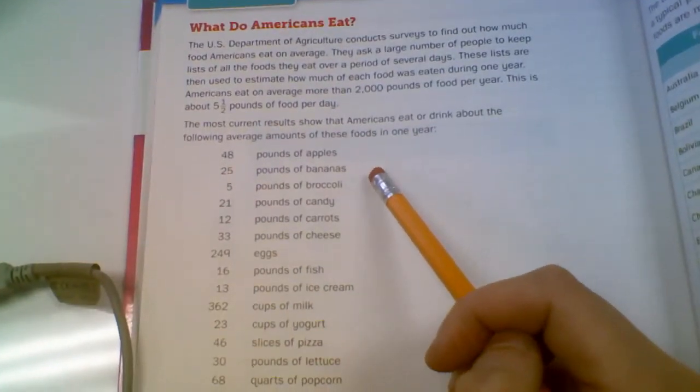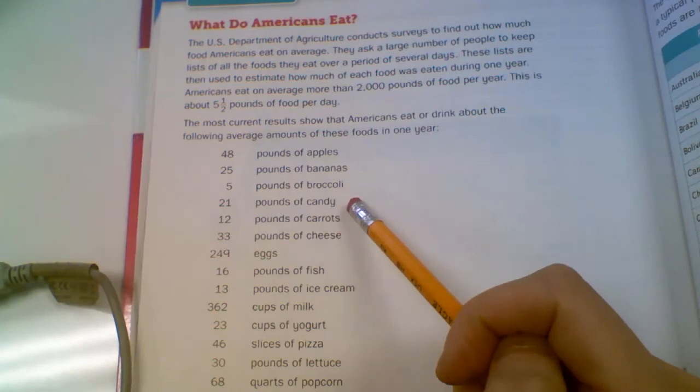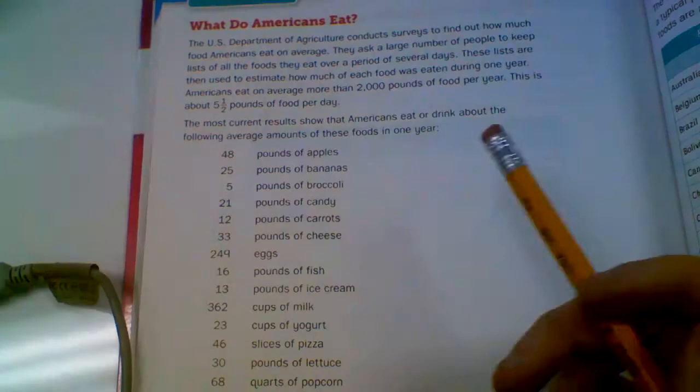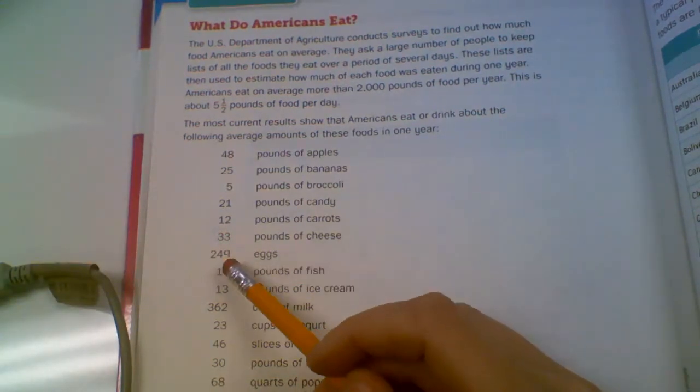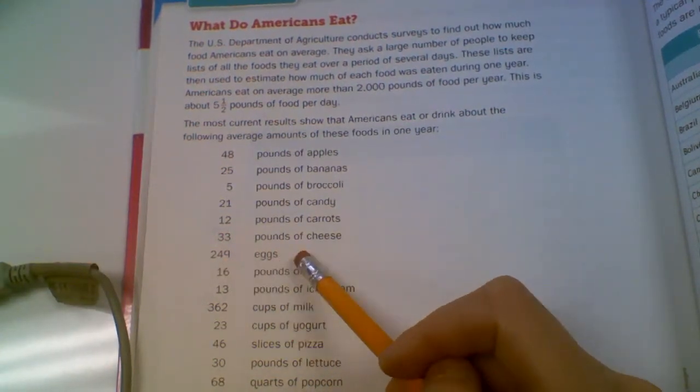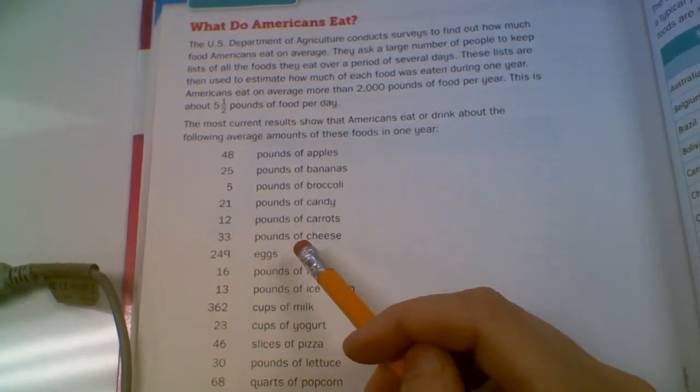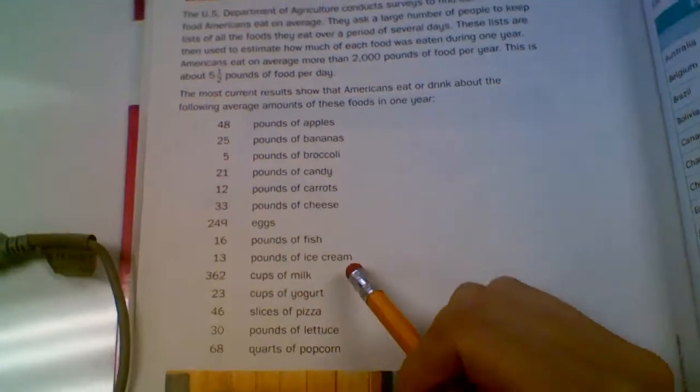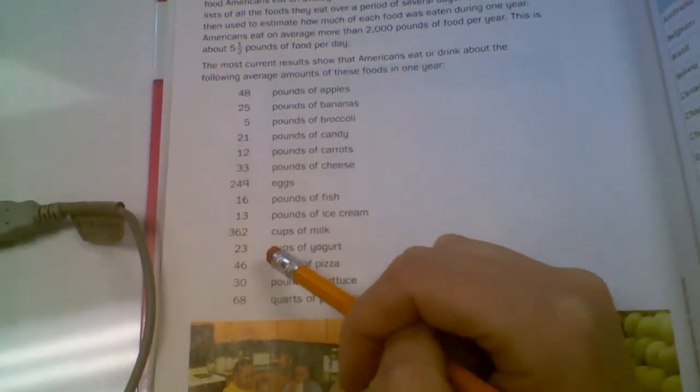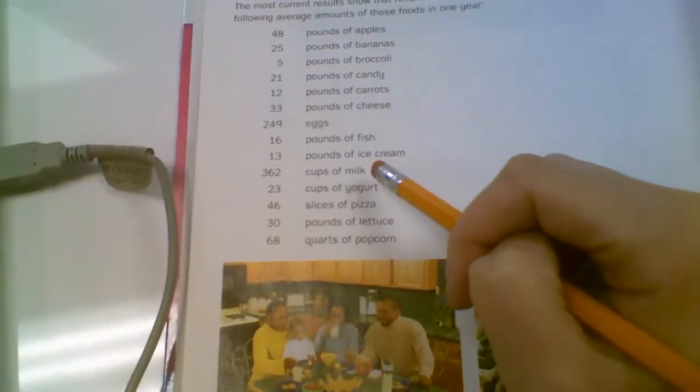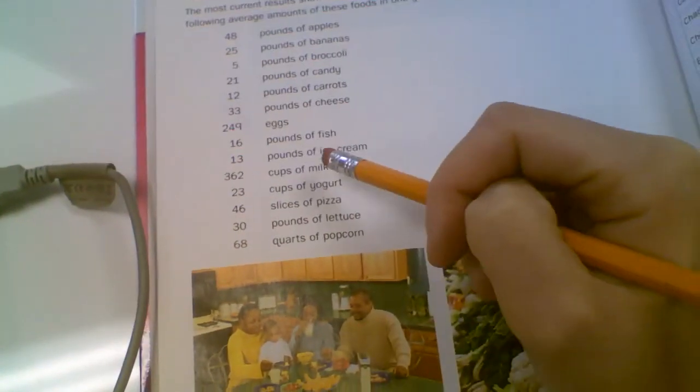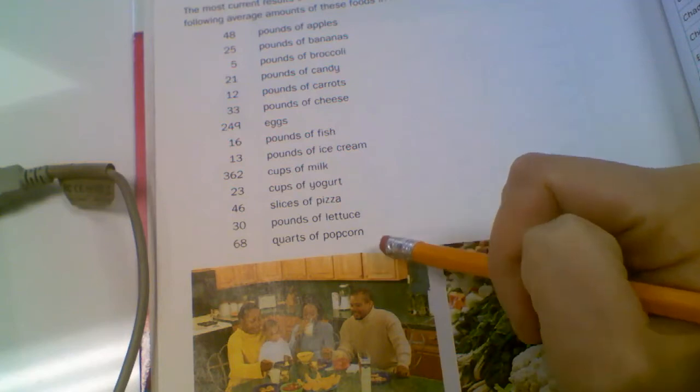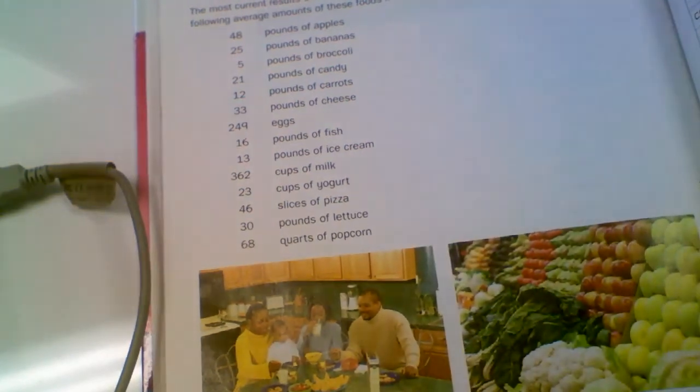That's a long time to keep track of your food. Americans eat on average more than 2,000 pounds of food per year. This is about five and a half pounds of food per day. Most current results show that Americans eat or drink about the following amounts, average amounts of these foods in one year. So the average adult eats 48 pounds of apples, 25 pounds of bananas, 5 broccoli, 21 pounds of candy.